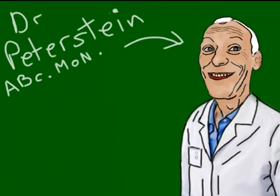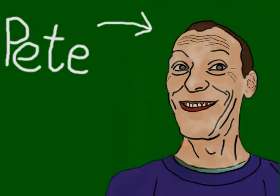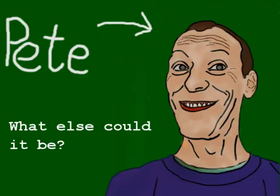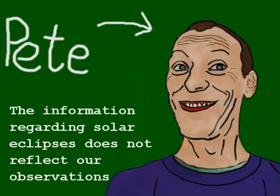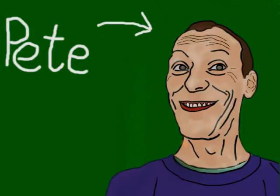So to understand the moon to cause a solar eclipse doesn't appear questionable. Now some of you might argue that it is the moon — as what else could it be — given the vast amount of information concerning solar eclipses. But one thing we have to remember is that our observations do not reflect the information provided, and the information presented to us about the moon and solar eclipses is just that: information.